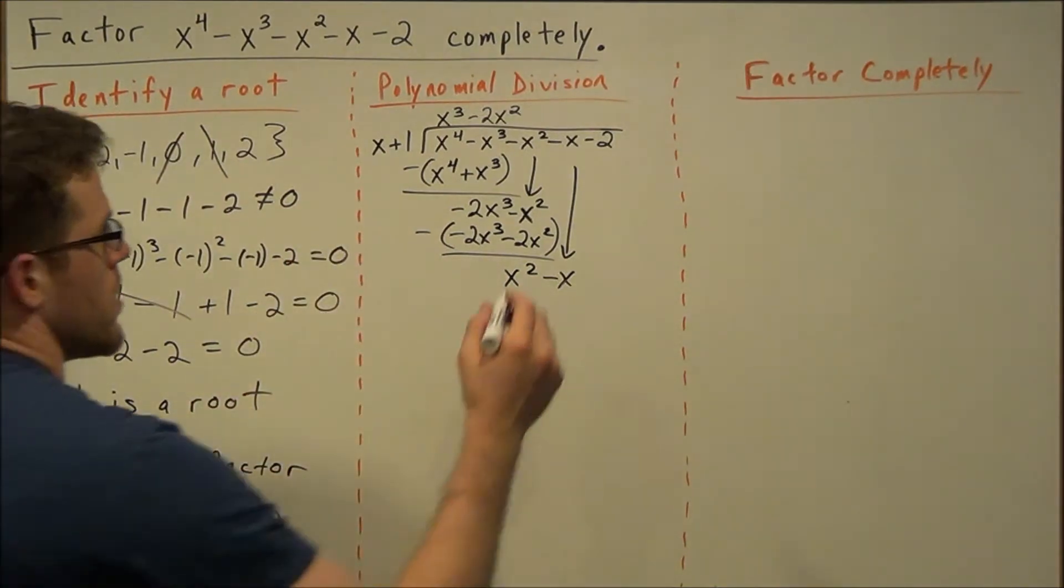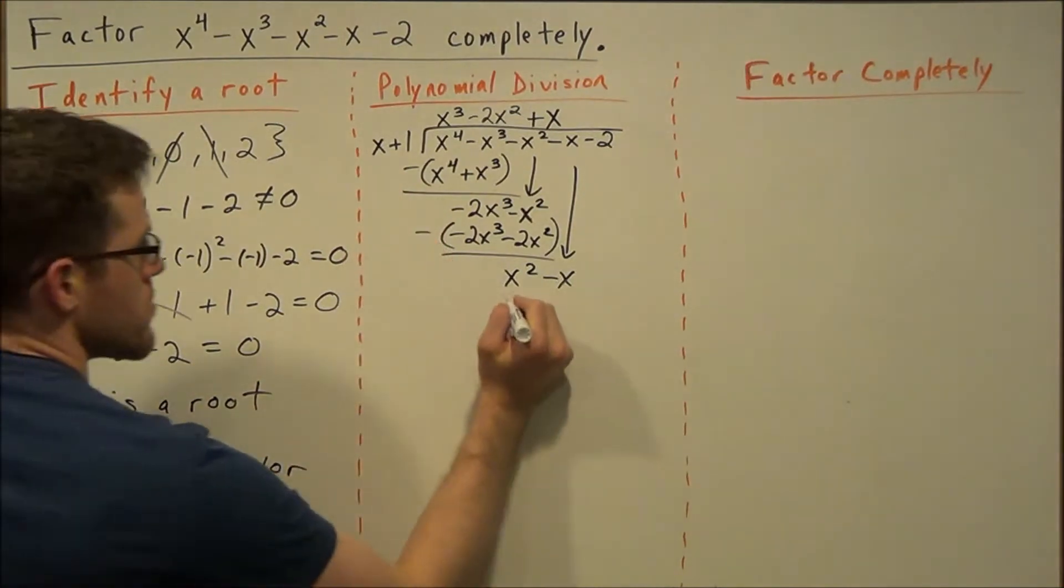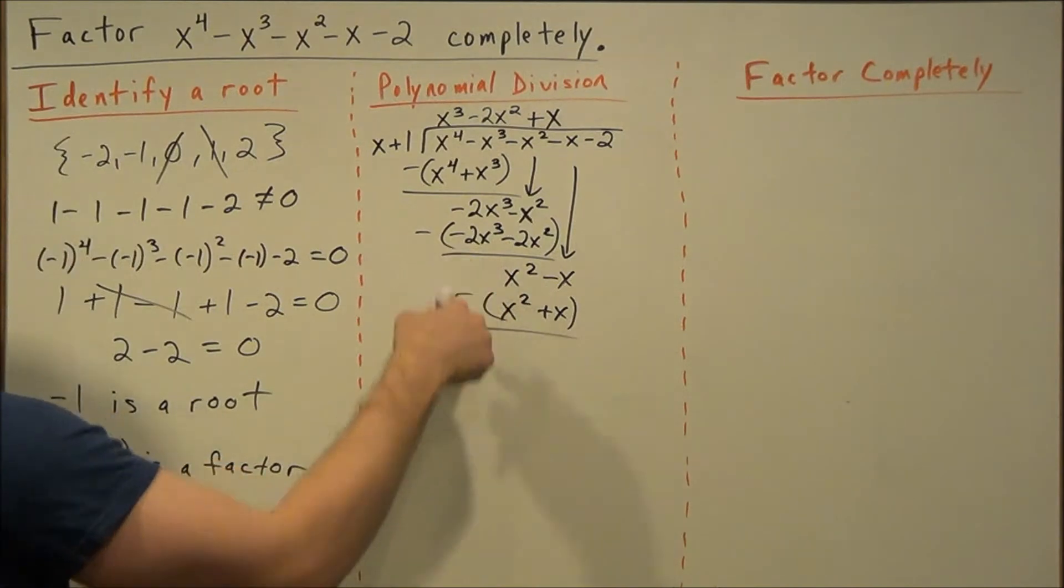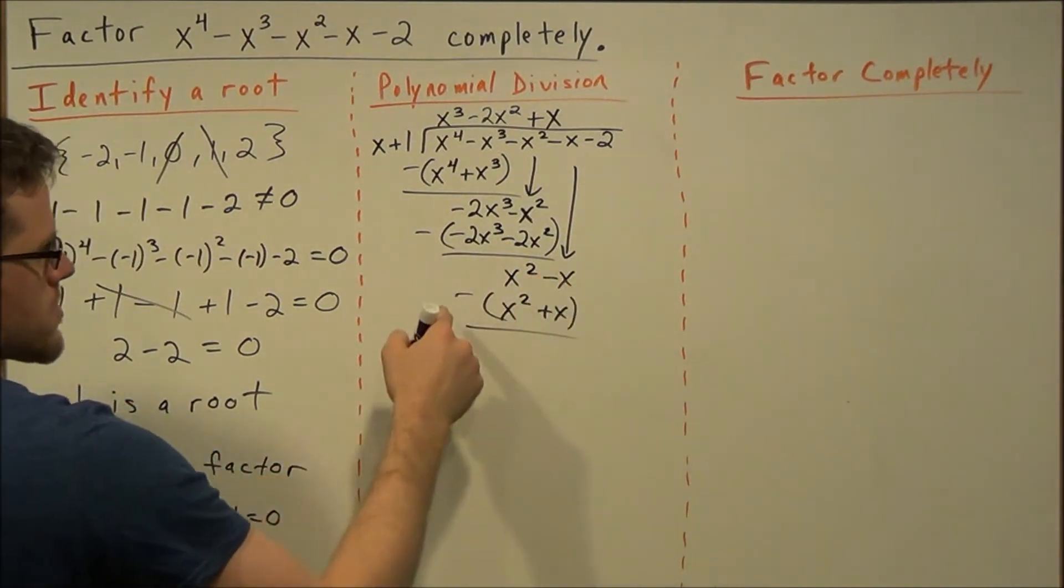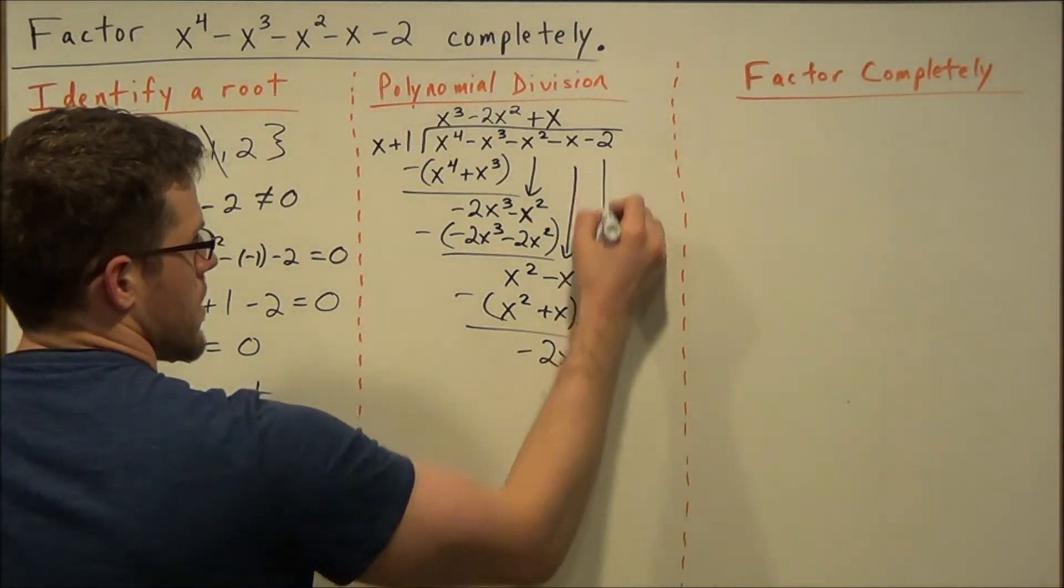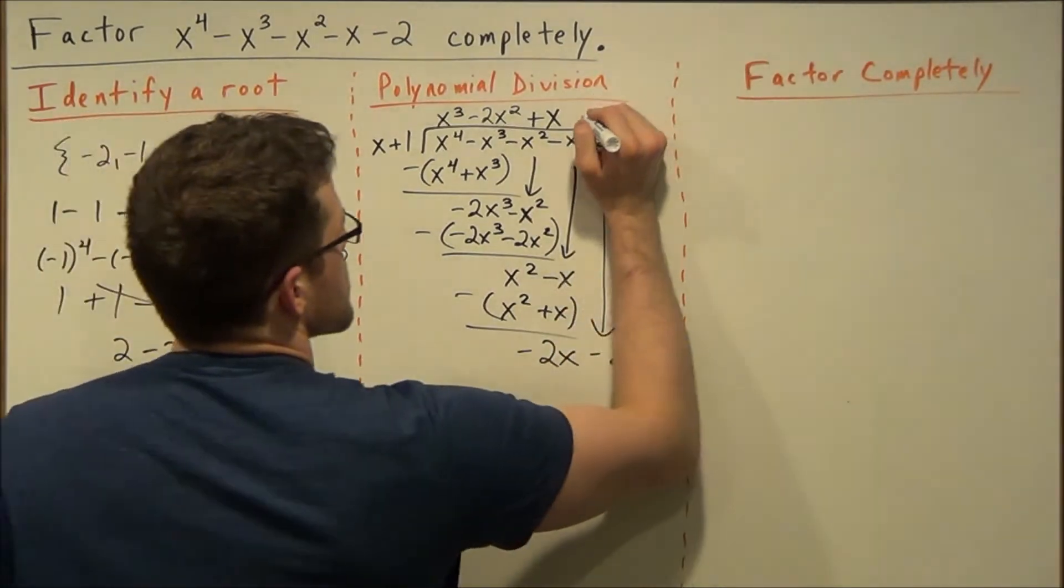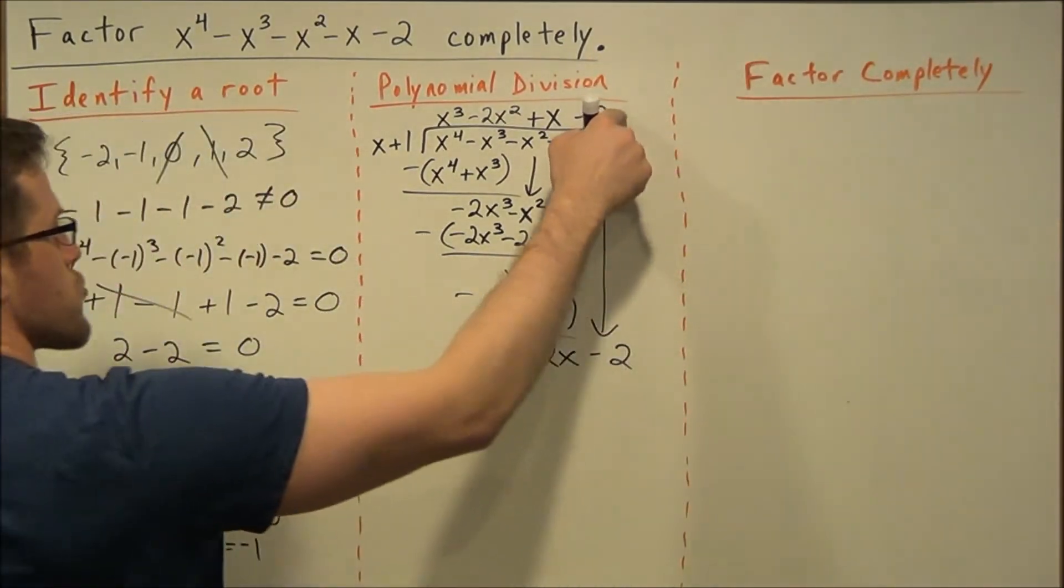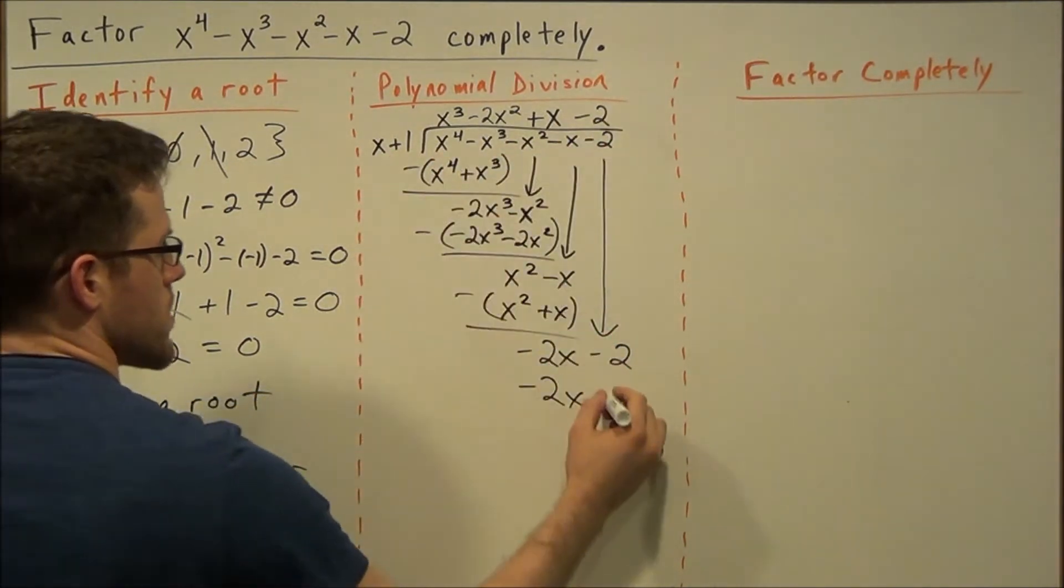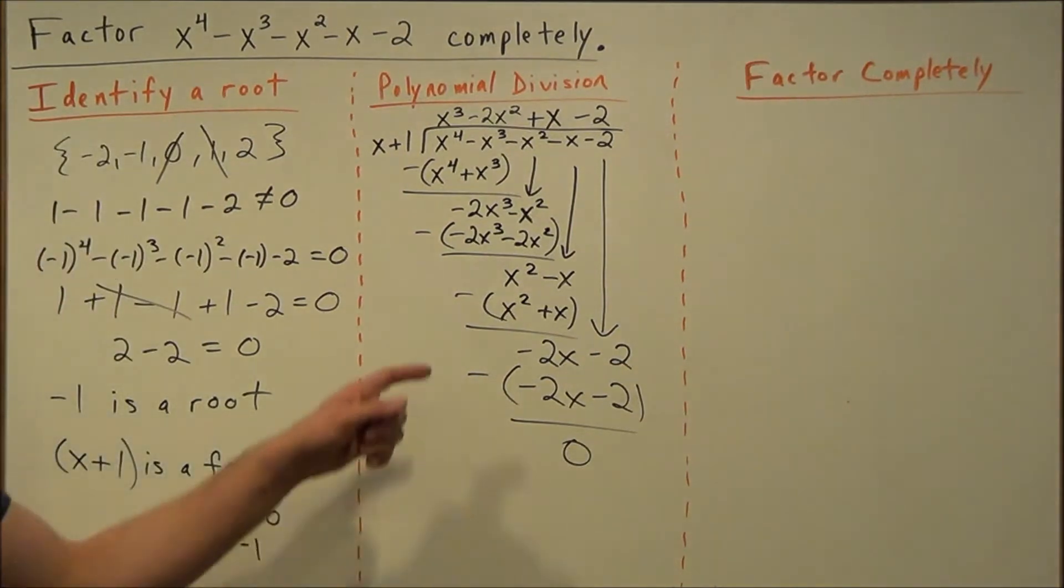And carry down the minus x. x goes into x squared, x times, so we have plus x. We distribute, we'll get x squared plus x. Subtract. The first two go away, minus x minus x will give us negative 2x. And if we did this correctly, we'll know at this step. x goes into negative 2x minus 2 times. Distribute, we'll have negative 2x, negative 2 times 1 is negative 2. And notice they match, which is a good sign, and these will cancel out completely.